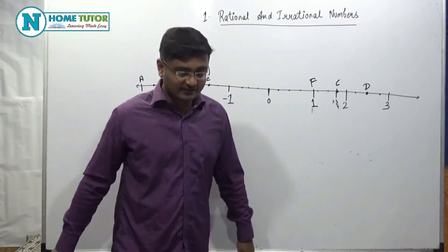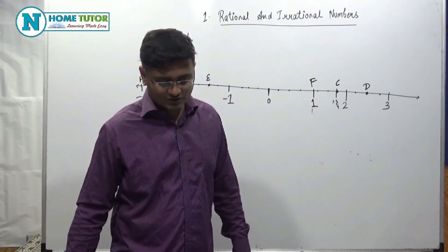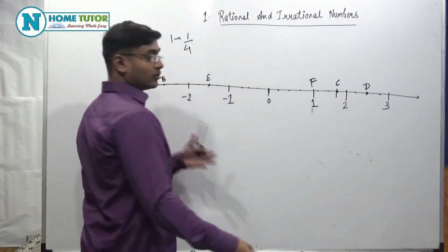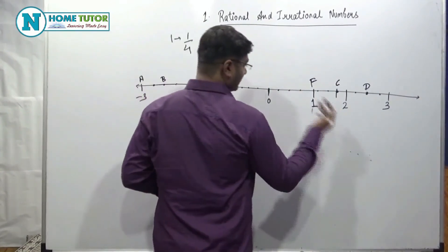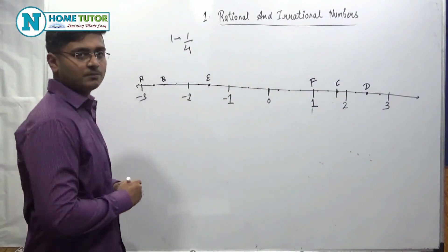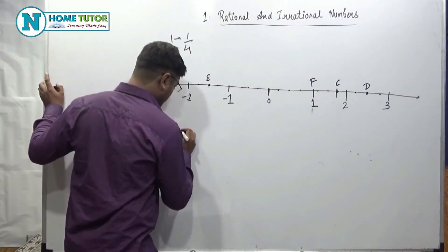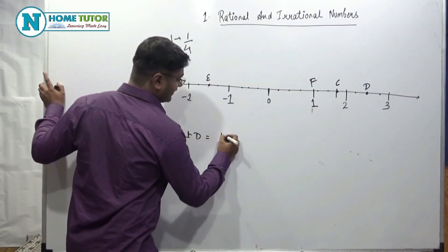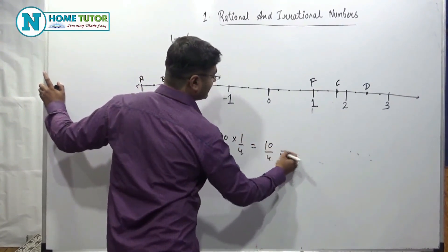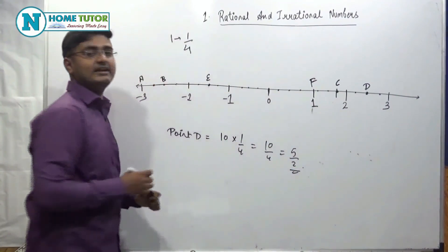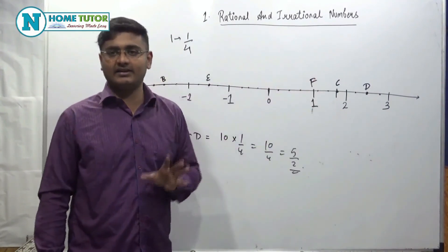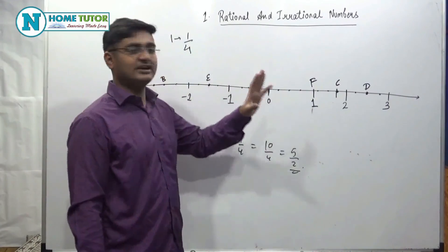The last question is: state whether the statement 'point D denotes the number 5 by 2' is true or false. First, let's check which number point D represents: 1, 2, 3, 4, 5, 6, 7, 8, 9, 10. Point D is the 10th point from 0. So point D equals 10 into 1 by 4, which is 10 divided by 4, equal to 5 by 2. Yes, point D denotes the number 5 by 2 — the statement is TRUE. This is how we can decode any number line and find which number is being represented.